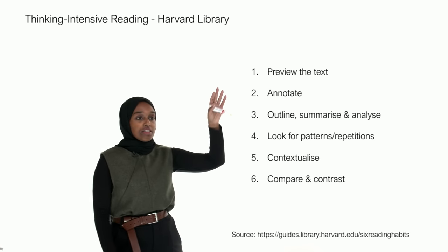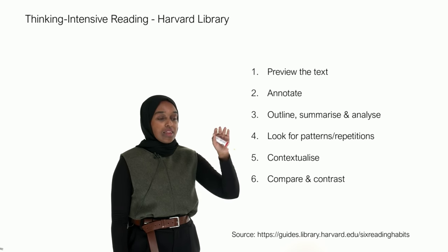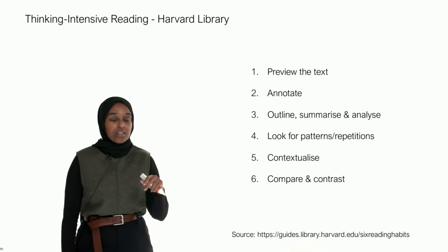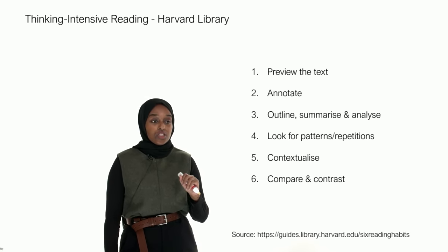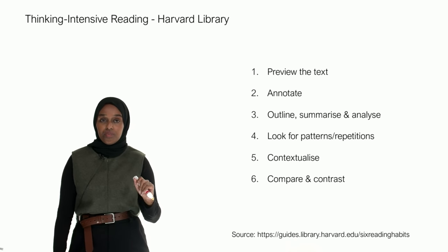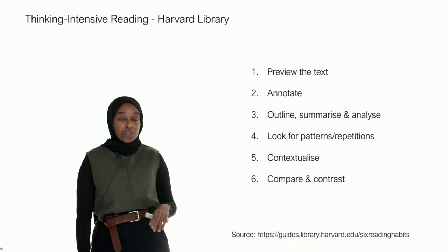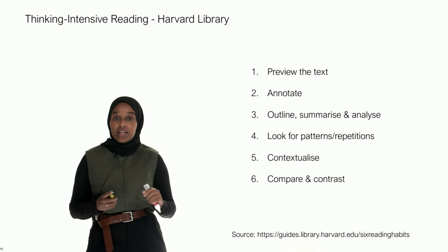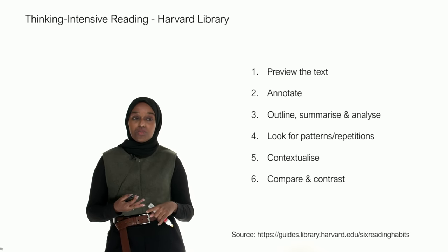The first is previewing the text, second is annotating, the third is outline, summarize and analyze, the fourth is look for patterns and repetitions, fifth is contextualize, and sixth is compare and contrast. These are six things you should be doing when you read any text — whether it's a book, a journal, or an article.